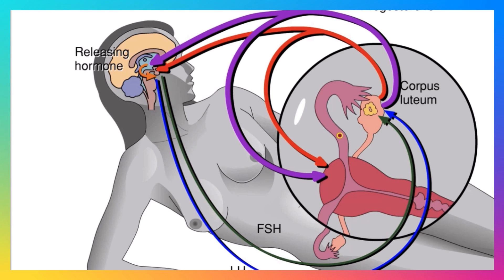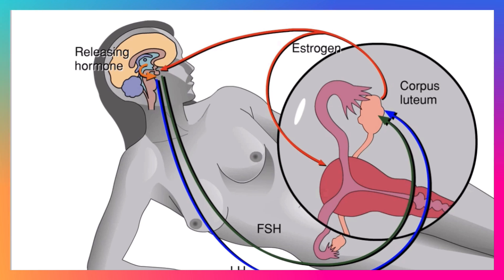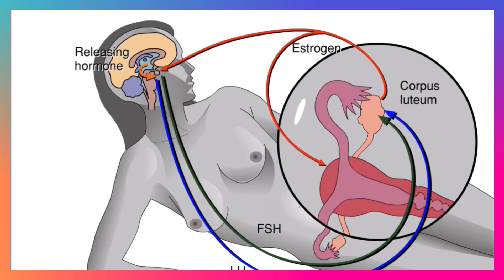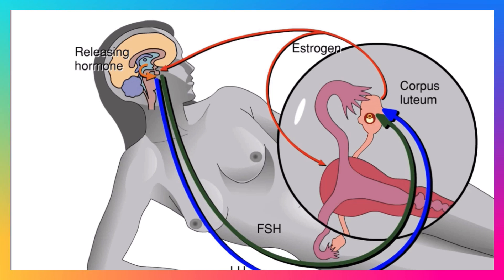What happens next depends on whether the ovum is fertilized or not. If the egg is not fertilized, the corpus luteum has a short lifespan. Suppression of LH after ovulation causes the corpus luteum to degenerate. As the corpus luteum's output of estrogen and progesterone drops, the lining of the uterus begins to slough off — the beginning of the menstrual period and start of the next cycle. The drop in estrogen and progesterone also reduces feedback inhibition of the hypothalamus and pituitary, triggering secretion of FSH and LH and stimulating the development of a new follicle.